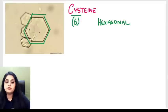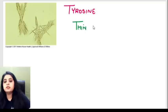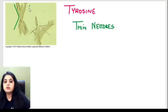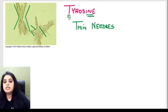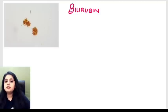The third crystal is tyrosine. They look like a bundle of thin needles — very pointed needles. Tyrosine will remind you of 'thin,' so thin needles equals tyrosine.